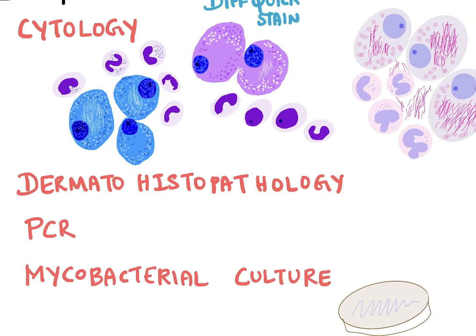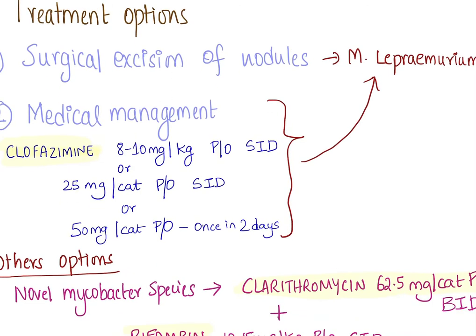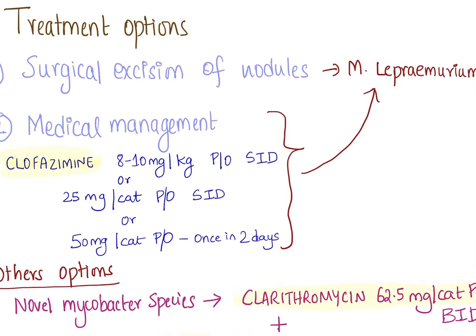You can also go for dermatohistopathology, where you excise the nodule and send it for histopathology, where they do acid-fast staining to see if there are any intracellular acid-fast bacilli. If you want to determine what subspecies it is, you can proceed with PCR. You can also consider mycobacterial culture, although it takes a very long time to get the results.